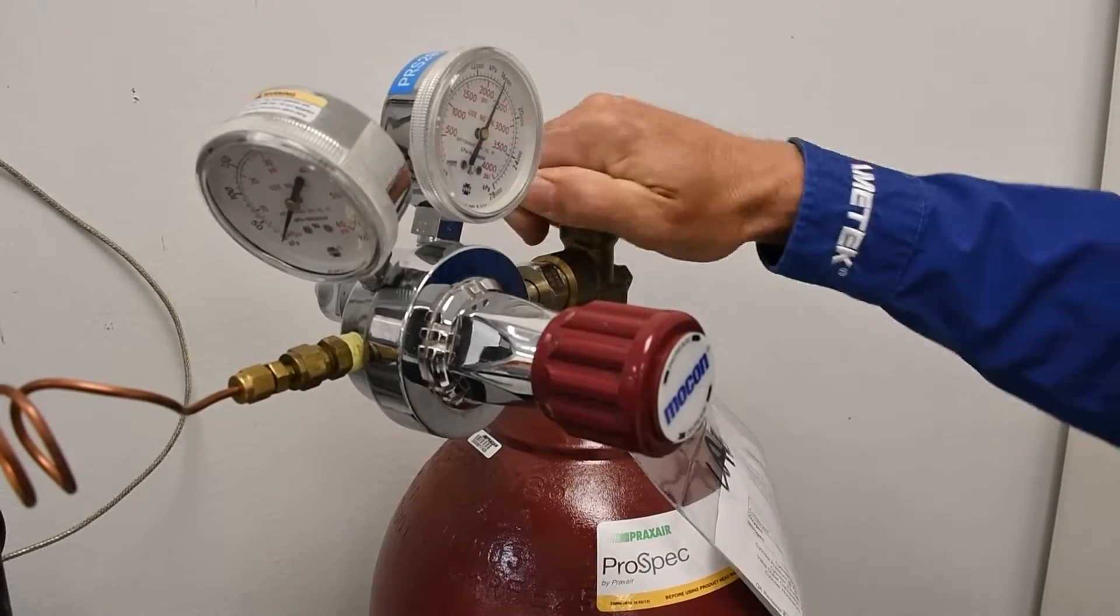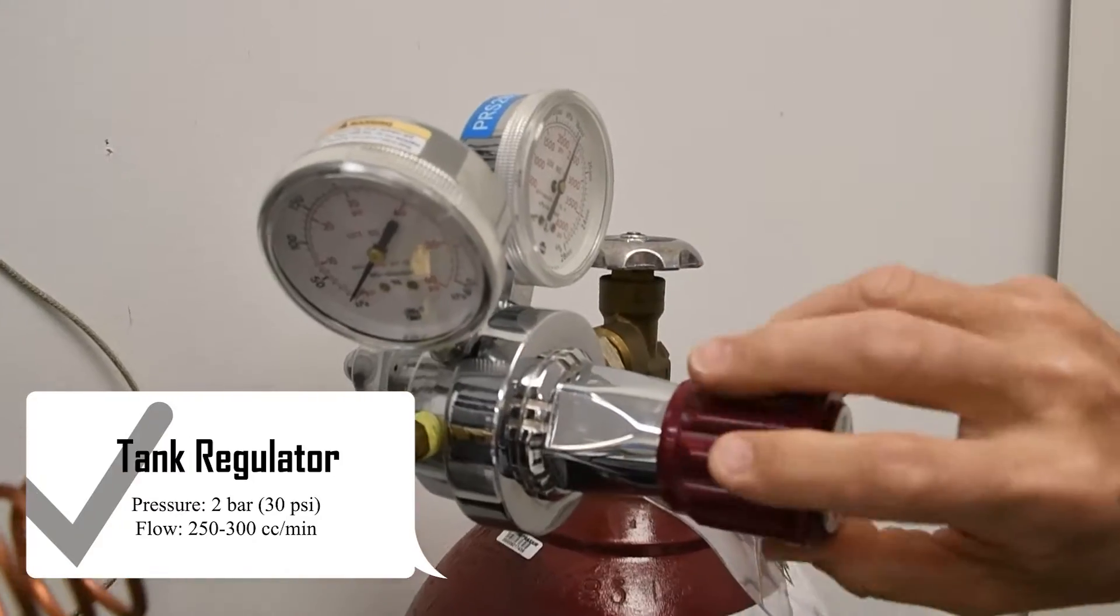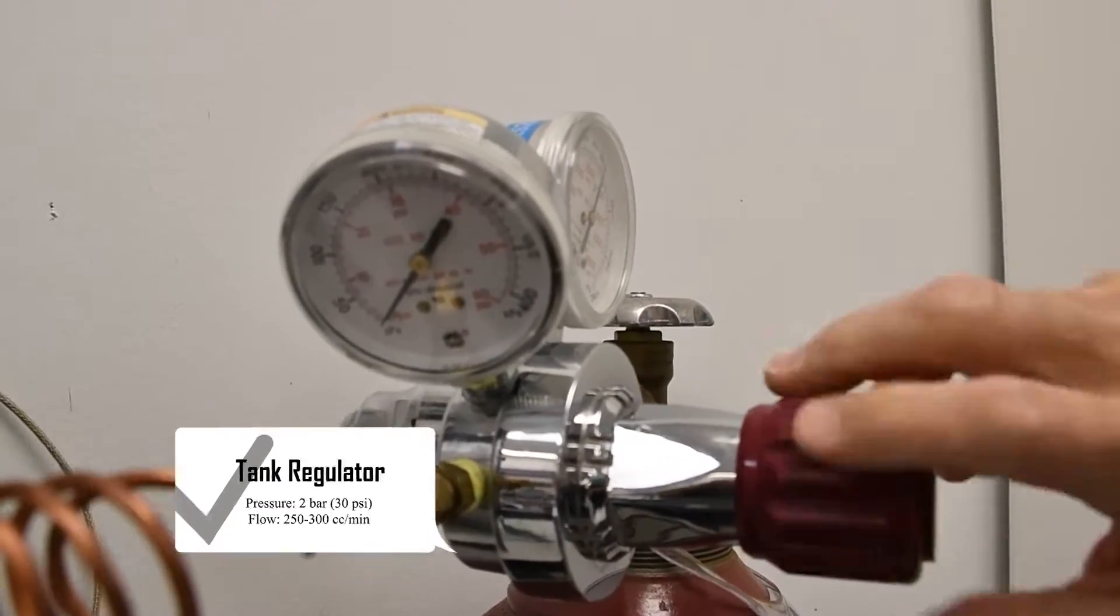Open the main tank valve and adjust the tank regulator to the following pressure, two bar or 30 psi. The flow 250 to 300 cc's a minute.